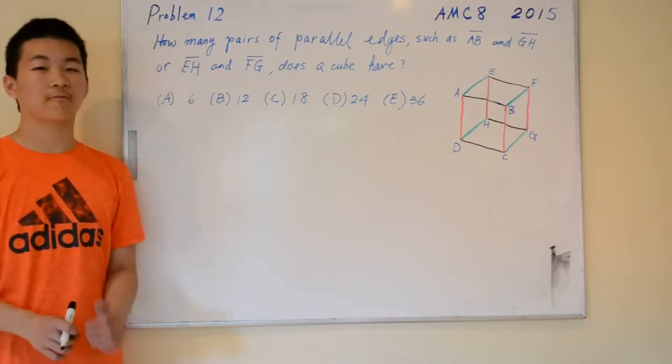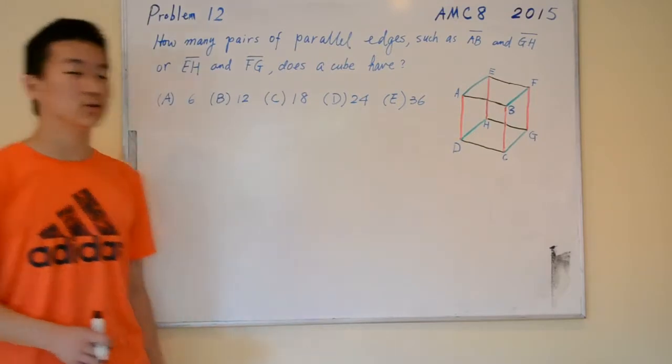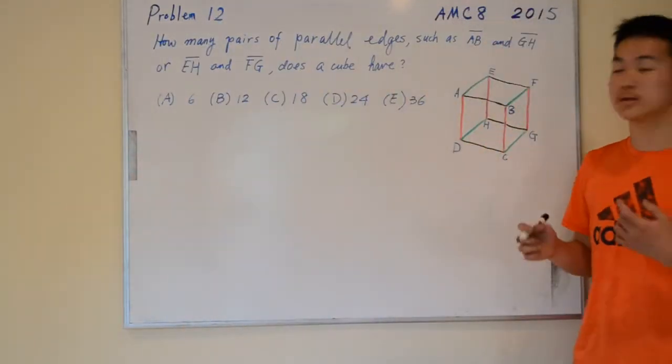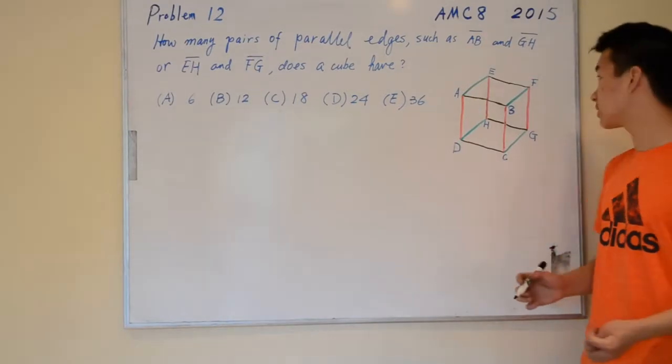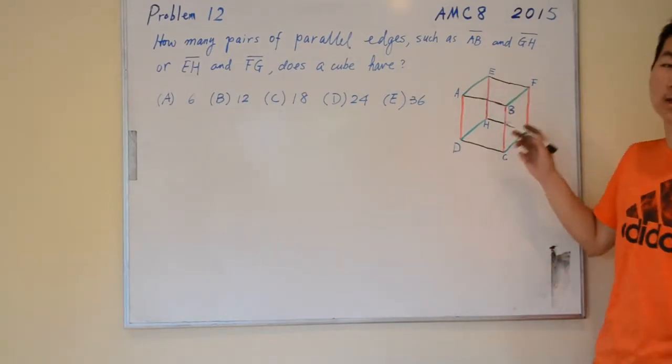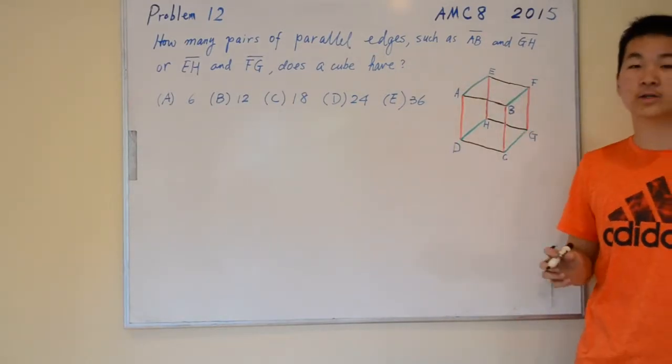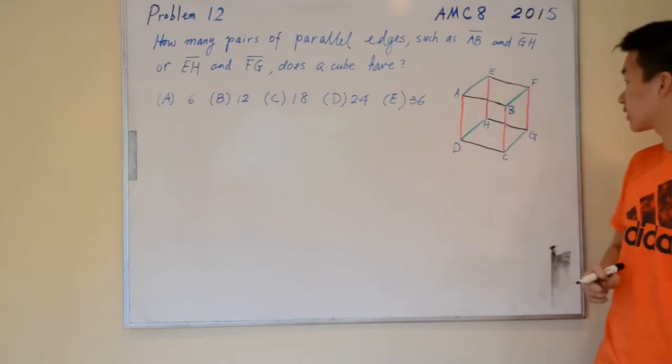To form a pair of parallel edges, we have to choose any two edges that are running in the same direction. For example, AE and BF are parallel edges because they are running in the same direction.